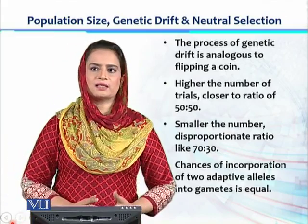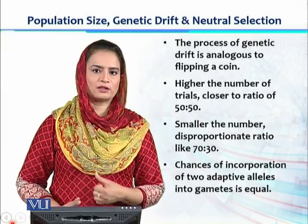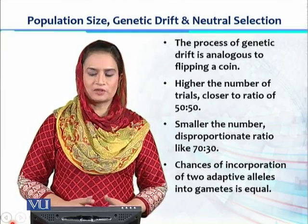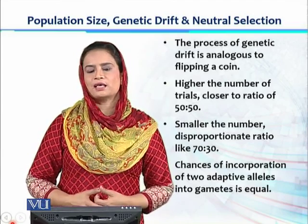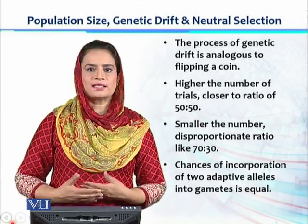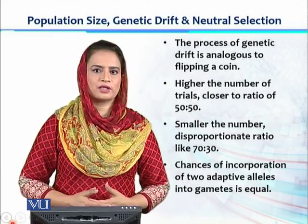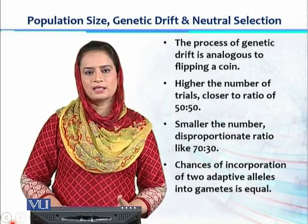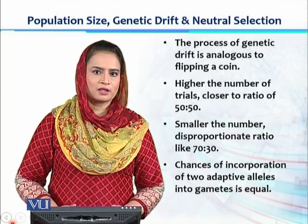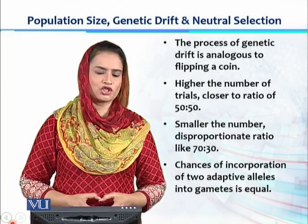We can understand genetic drift using a coin flip analogy. There is a 50-50 chance of getting heads or tails. When we flip the coin many times — say 100 times — we get closer to the ideal 50-50 ratio: 50 heads and 50 tails. But if we reduce the number of flips to only 10 times, the data becomes small and results deviate from the ideal ratio. Similarly, in a smaller population the results deviate from expected proportions.